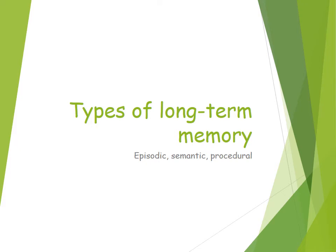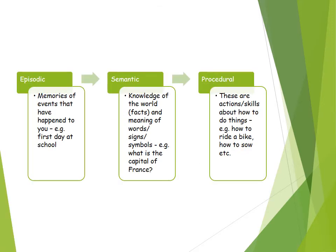There are three types of long-term memory: episodic, semantic, and procedural. Episodic memories are memories of events that have happened to yourself — they are episodes of our life. For example, if asked to recall your first day at school, you should be able to remember what you felt and what the day was like. They are quite complex memories and are time-stamped, meaning they happened at certain times.